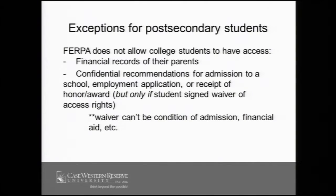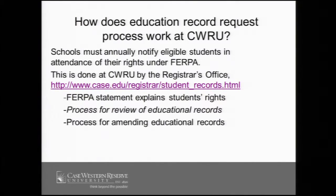There are certain education records that FERPA explicitly says higher ed students may not see: financial records of their parents that the school may be keeping, for example in the financial aid office, and also certain confidential recommendation letters for admission or other recommendation letter purposes. Post-secondary schools like us are required to annually notify our students of their FERPA rights, and we do this on the web pages of our university registrar. The pages include an explanation of rights under FERPA, the process for requesting review of education records, and also the process of amending them.